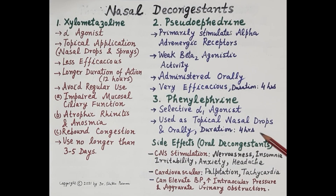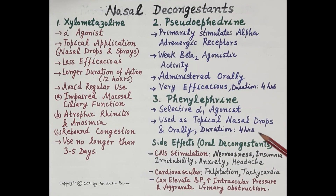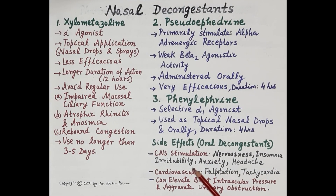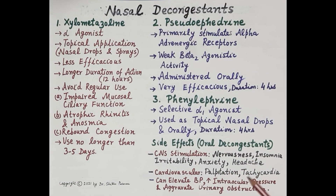The next decongestant is phenylephrine, a selective alpha-1 agonist. It is used topically as nasal drops as well as orally, with a duration of action of four hours. Important side effects of oral decongestants include CNS stimulation such as nervousness, insomnia, irritability, anxiety, and headache; cardiovascular effects like palpitations and tachycardia; elevated blood pressure; increased intraocular pressure; and aggravation of urinary obstruction.